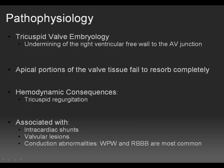Normally, tricuspid valve embryology involves undermining of the right ventricular free wall to the level of the atrioventricular junction. However, in patients with Epstein's anomaly, apical portions of the valve tissue fail to resorb completely. Patients become symptomatic due to severe hemodynamic consequences, primarily secondary to tricuspid regurgitation, the level of which is dependent upon the extent of leaflet displacement.